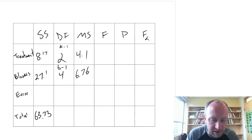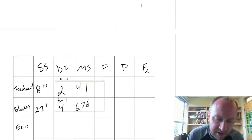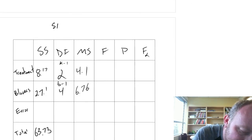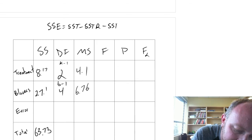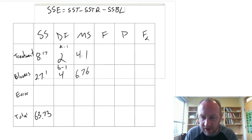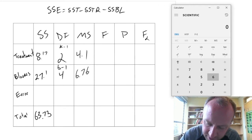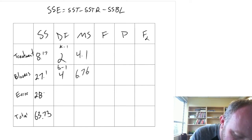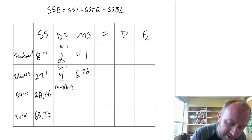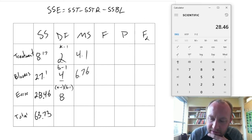So we have, this one is going to be the easiest of the calculations. SSE. This is SST minus SSTR minus SSBL. So once we've got those first few done, this one becomes easier. 63.73 minus 27.1 minus 8.17 equals 28.46. In error, the degrees of freedom are a little bit different. K minus 1 times B minus 1. So this is simply 2 times 4. So 8. And then 28.46 divided by 8 equals 3.56.